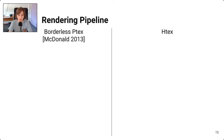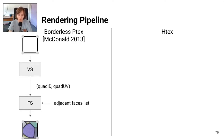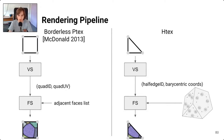Comparing HTex with Borderless Ptex, the state-of-the-art GPU implementation of Ptex: Borderless Ptex works only with quad meshes, drawing faces and requiring the face index, position inside the face, and the list of adjacent faces for seamless filtering. With HTex we draw triangles from our triangulation, requiring the half-edge index, barycentric coordinates inside the triangle, and using the half-edge data structure for adjacency queries. The output is a textured triangle.